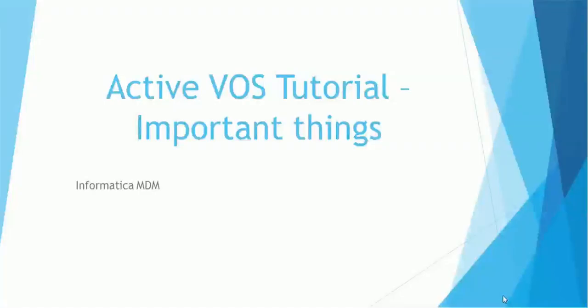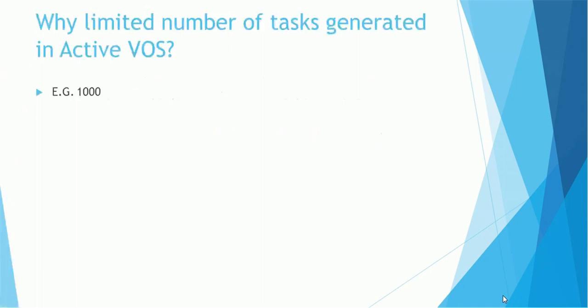Informatica Data Director, that is IDD, works with ActiveOS in order to manage the tasks. There are important things we need to remember: why a limited number of tasks are generated in ActiveOS. For example, 1000 — we just saw in the IDD application that 1000 records are getting displayed. Why 1000? Why not all records? Here is the answer.